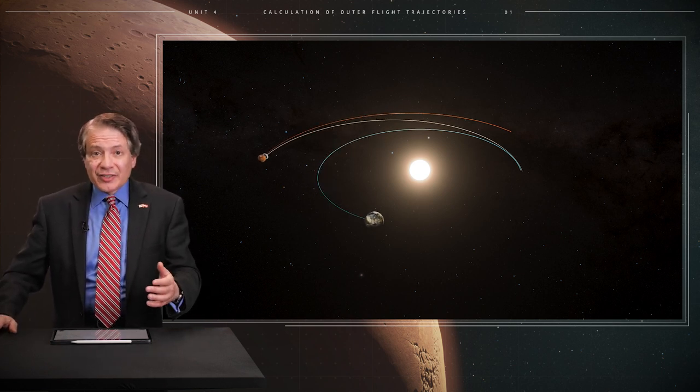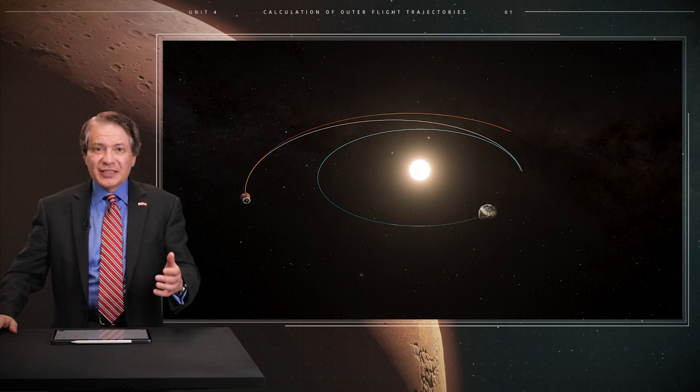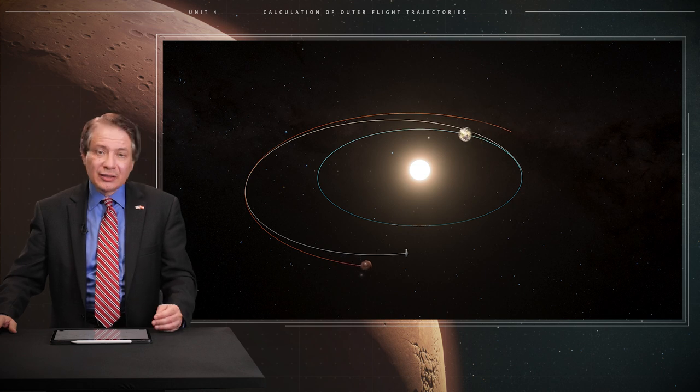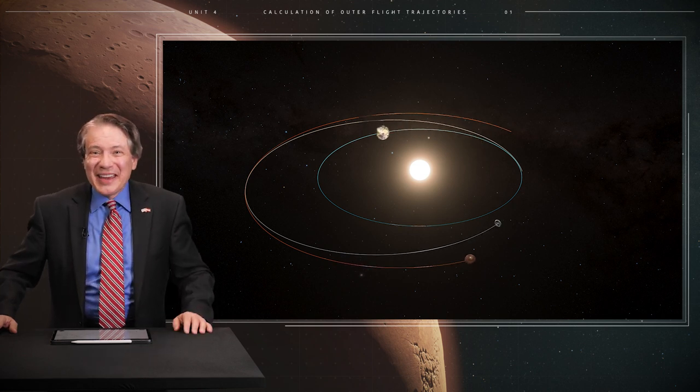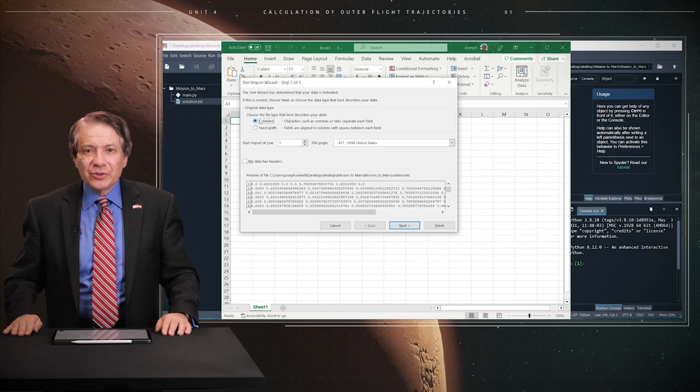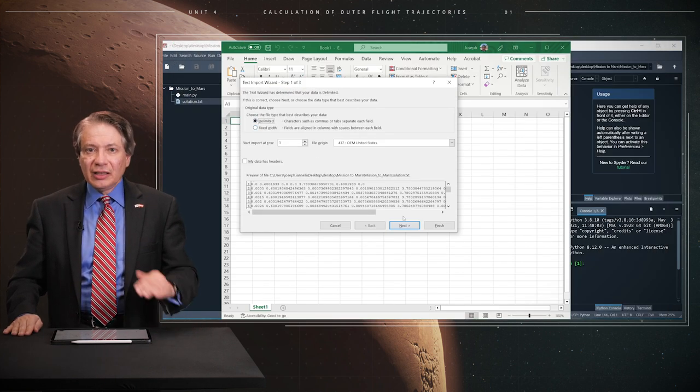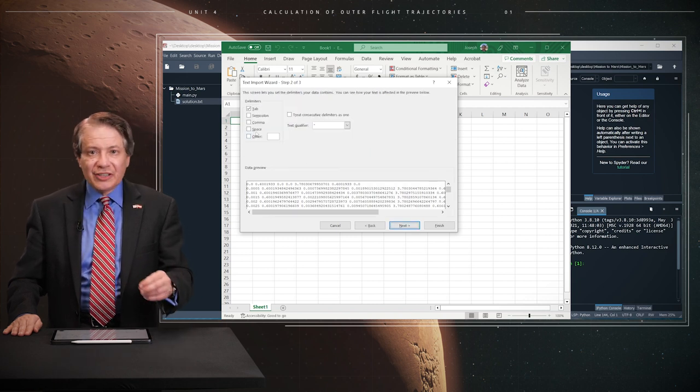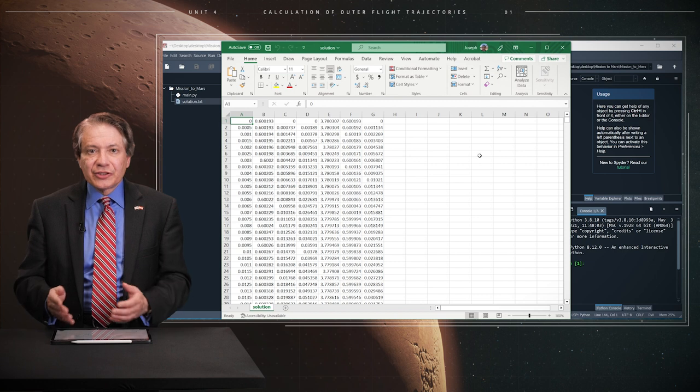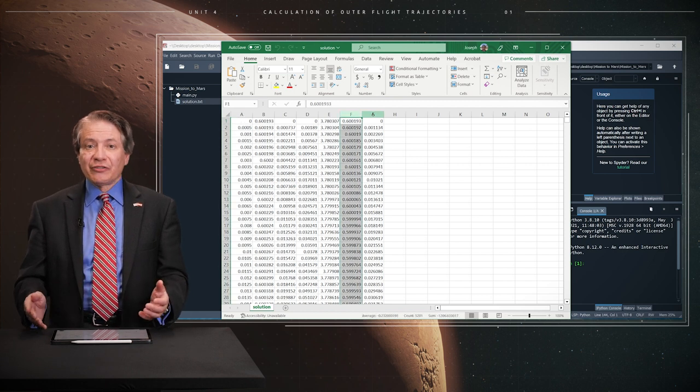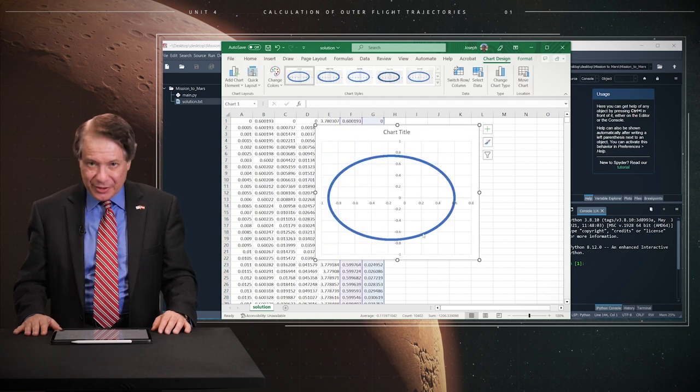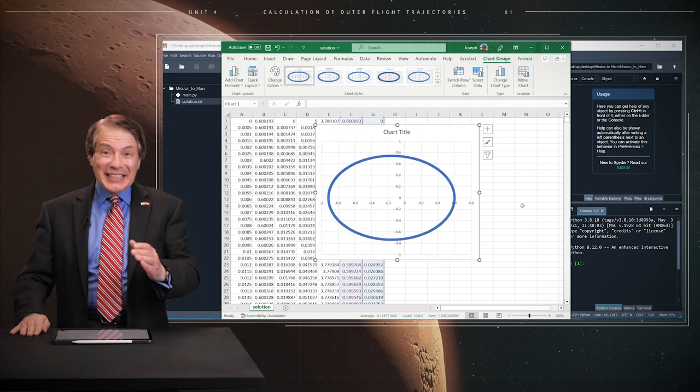The program then generates the solution and stores it in an external file named solution.txt. This file may then be post-processed using Excel. We open the solution.txt file in Excel for the purpose of visualizing the solution. In so doing, we obtain the trajectory of the spacecraft from Earth to Mars. As expected, that is elliptical.